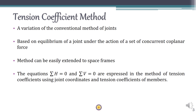The tension quotient method is basically a neat representation of our conventional method of joints, wherein we use the principle of joint equilibrium and each joint is taken to find the member forces. The main advantage of the tension quotient method is that it can be easily extended to space frames, which is difficult to analyze using the method of joints. We write equilibrium equations sigma H equal to zero and sigma V equal to zero, but we represent these equations in terms of tension quotients and joint coordinates.